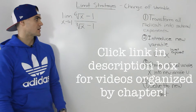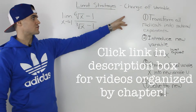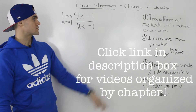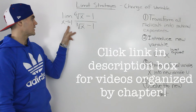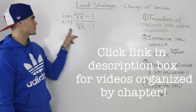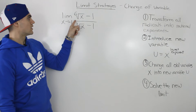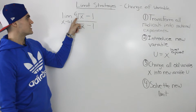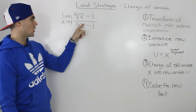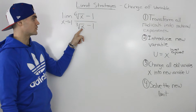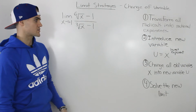Moving on to our next example for the change of variable strategy for solving limits, we have the limit as x approaches one of the sixth root of x minus one, all over the third root of x minus one.